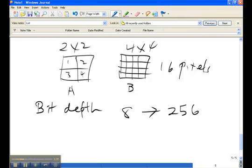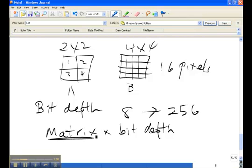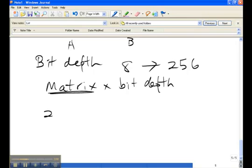The formula that is used to calculate the amount of memory required is matrix multiplied by bit depth is the amount of memory required to save an image. And the matrix in this particular case is the full matrix both numbers together, so let's say we had a 256 by 256 matrix.